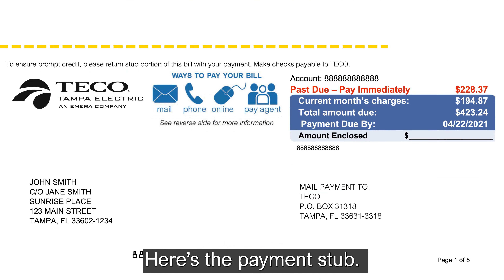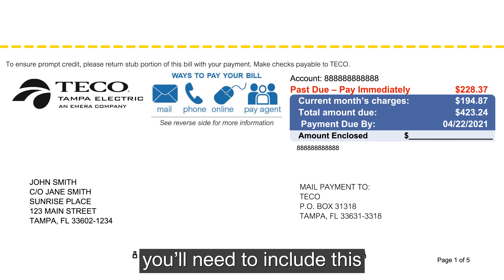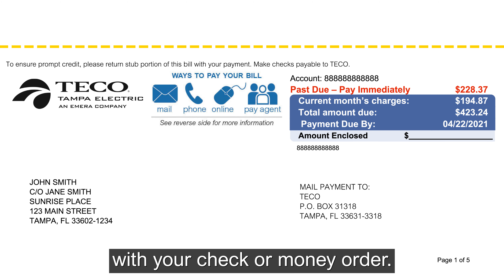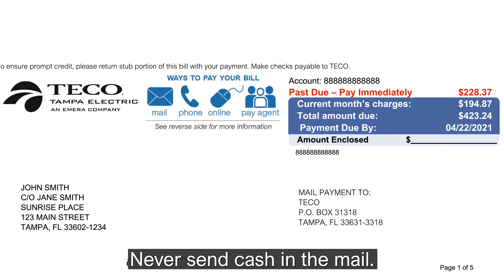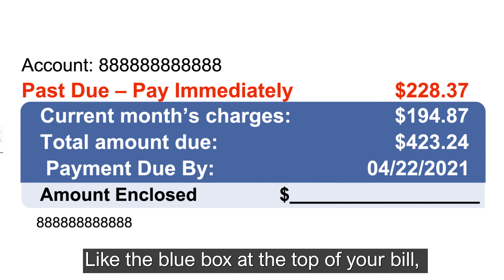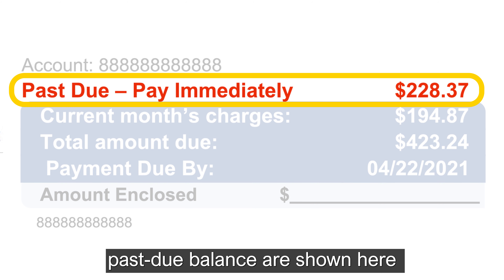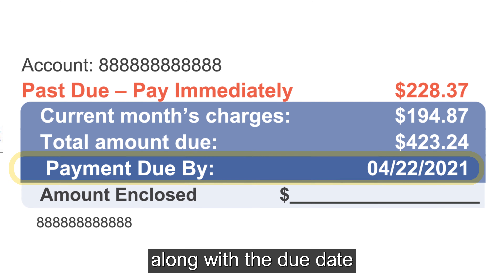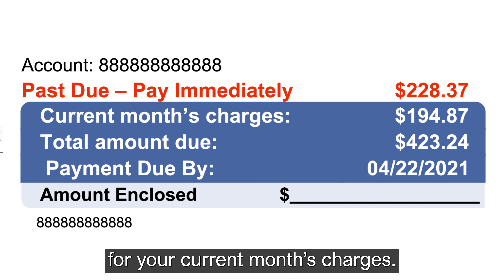Here's the payment stub. If you mail us your payment, you'll need to include this with your check or money order. Never send cash in the mail. Like the blue box at the top of your bill, your current charges and any past due balance are shown here along with the due date and your account number.